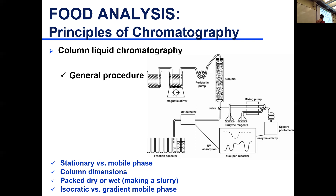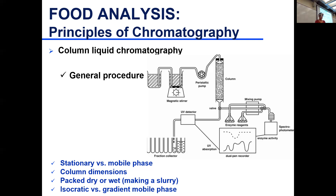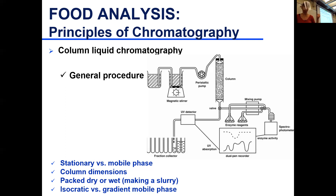Column dimension is important. The longer the column and the smaller its diameter, the better the resolution. We'll talk about this when we cover resolution of peaks, because — like the extraction tube example — the more equilibria you achieve, the better the separation between your compounds.